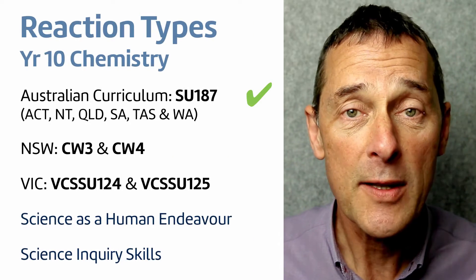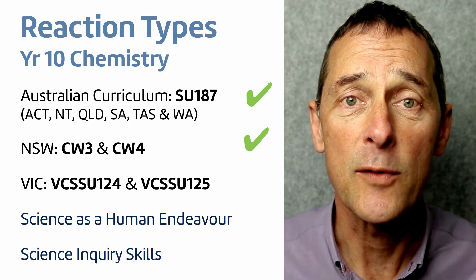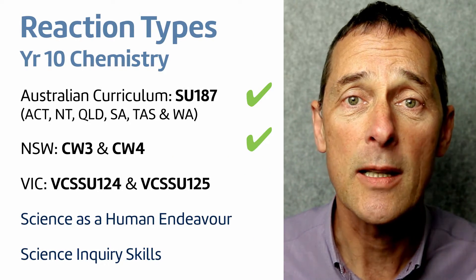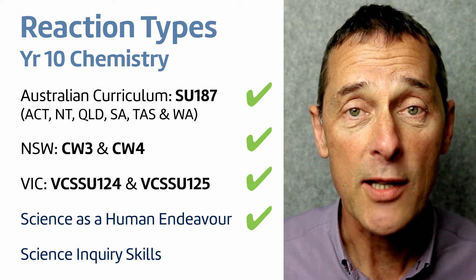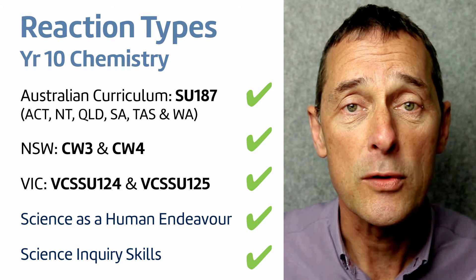Hello, I'm Jim Rowntree from Cosmos Lessons. I'd like to tell you about our new unit, Reaction Types. It's a chemistry unit with everything you'll need for Year 10 curriculum codes that cover chemical reactions to produce useful substances and rates of reaction.